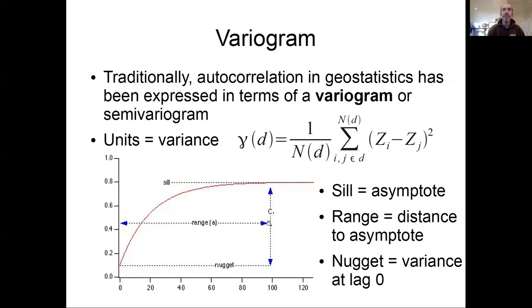The other interesting piece of information a variogram gives us is the nugget, which is the variance at lag 0. If we're fitting these functions and extrapolate back to 0, that y-intercept value is often positive, indicating that even at very small distances there's some additional residual error not attributed to space. That's a good way of thinking about the nugget—it's the residual variance that doesn't have a spatial component to it, even if you account for spatial autocorrelation.